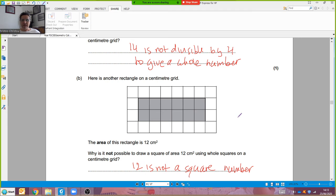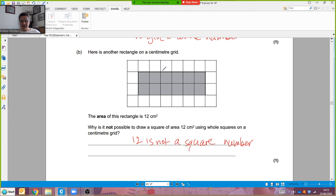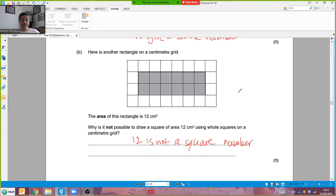Here's another rectangle grid and its area is clearly 2 times 6, 12 centimeter squares. Why is it not possible to draw a square of area 12 centimeter squares? Answer: 12 is not a square number. You can go 4 by 3, well that's not a square that's a rectangle. The square number before 12 is 9 and the square number after 12 is 16. 12 is not a square number therefore you can't draw it with whole centimeter squares.